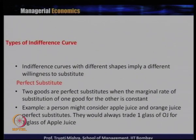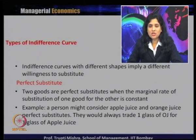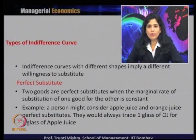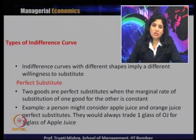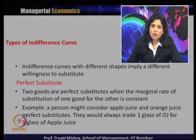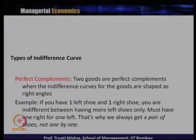We will now look at the different types of indifference curves. There are two types of goods: substitute goods and complementary goods. Indifference curves with different shapes imply different willingness to substitute. For perfect substitutes, the MRS of one good for the other is constant — for example, tea and coffee, where one cup of tea equals one cup of coffee. A person might consider apple juice and orange juice as perfect substitutes, always trading one glass for one glass. For complementary goods, the indifference curve is shaped as a right angle — like a left shoe and right shoe, where you must have one of each.